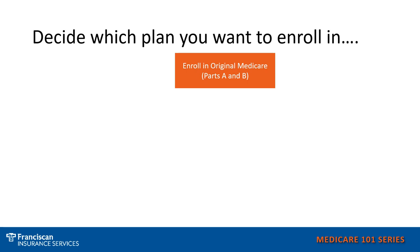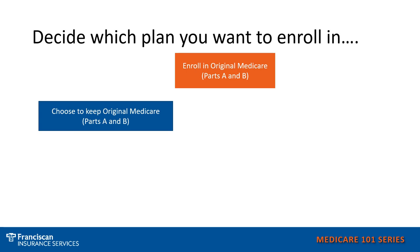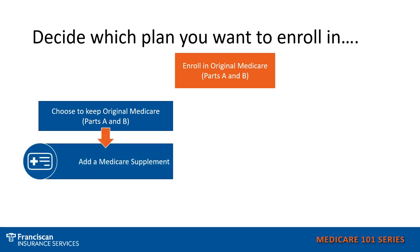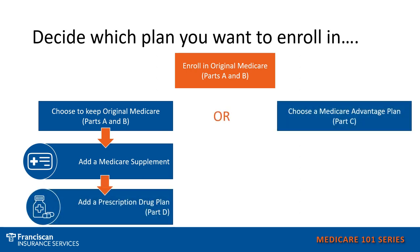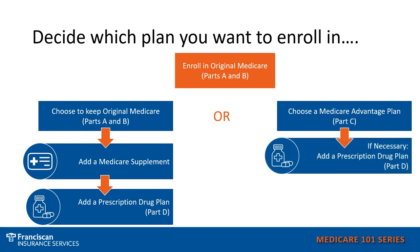Once you have figured your costs and your premiums for each type of plan, then you need to decide which plan you are going to enroll in. Your first step would be enrolling in Original Medicare, and then if you decide to go with a Medicare supplement, you would want to add that and a prescription drug plan. If you decided that you would like to go with the Medicare Advantage plan, then you need to choose the plan that you feel best fits your needs and enroll in that Medicare Advantage plan.